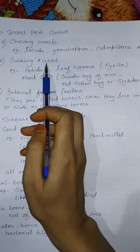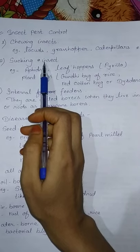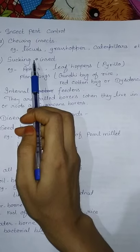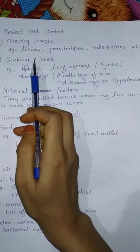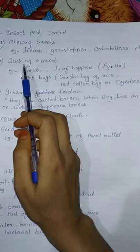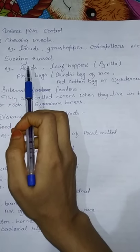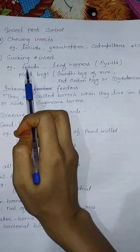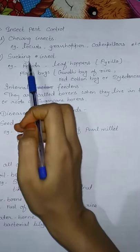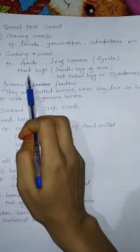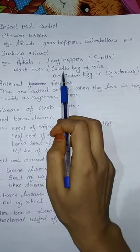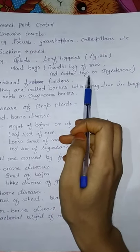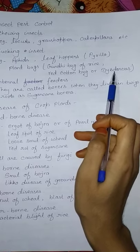The second type is sucking insects, which extract minerals and hormones from plants, similar to how mosquitoes suck blood from humans. These sucking insects cause deficiency in plants. Examples include leaf grates, grandi buddle of rice, red cotton buddle, and rice tardiness.